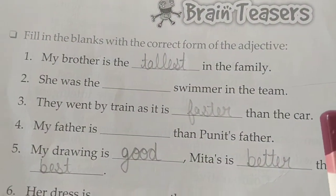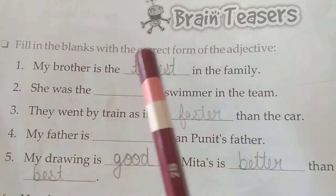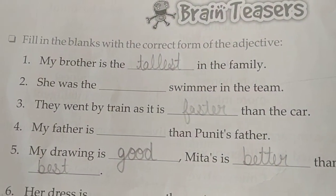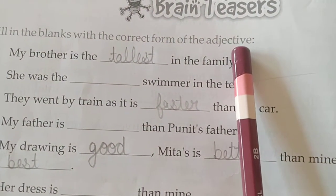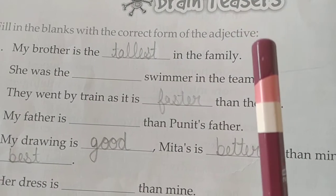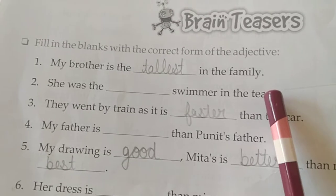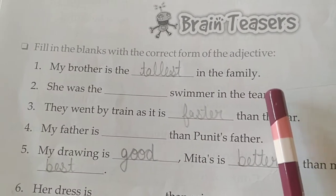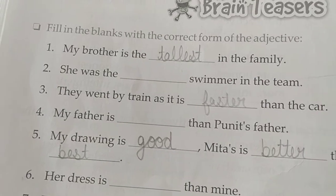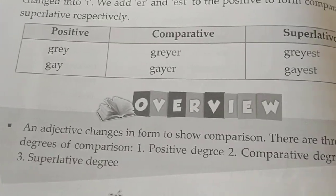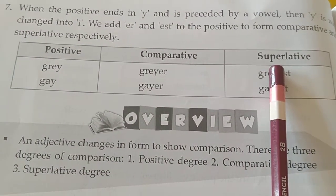Let's get started. Fill in the blanks with the correct form of adjectives. An adjective is that which tells the quality of a noun or pronoun. We have already discussed that there are three types: positive, comparative, and superlative forms of adjectives.